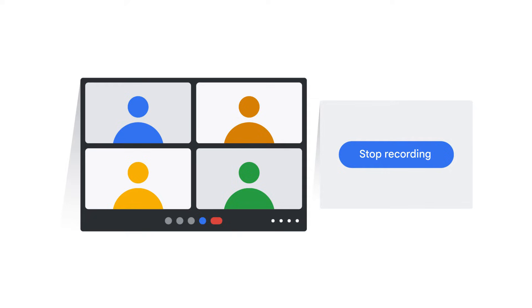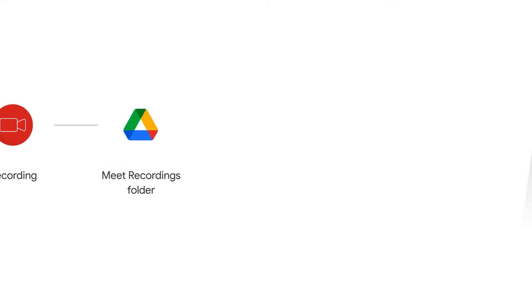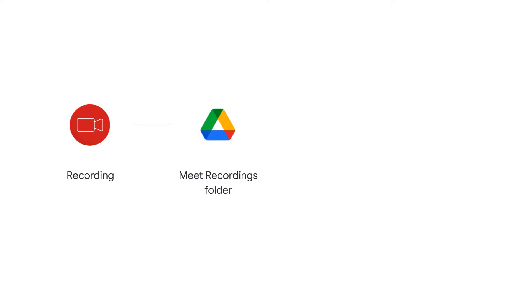Your Google Workspace administrator must enable this feature. Recorded Google Meet videos are saved to the meeting organizer's My Drive in a Meet Recordings folder. The meeting organizer also receives an email with a link to the recording.